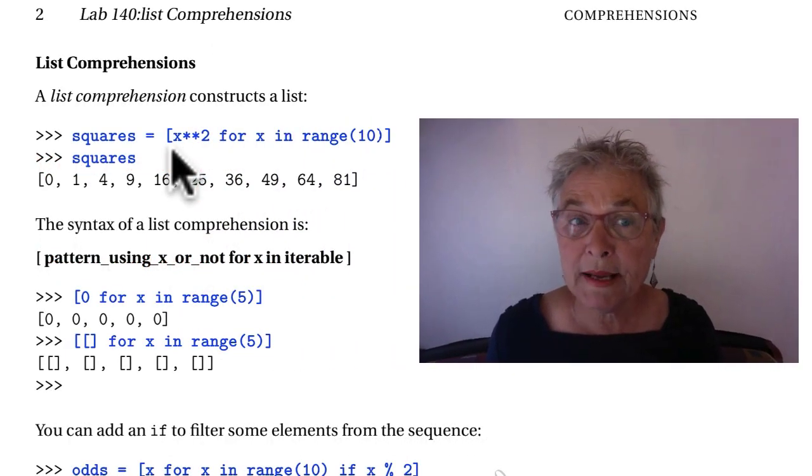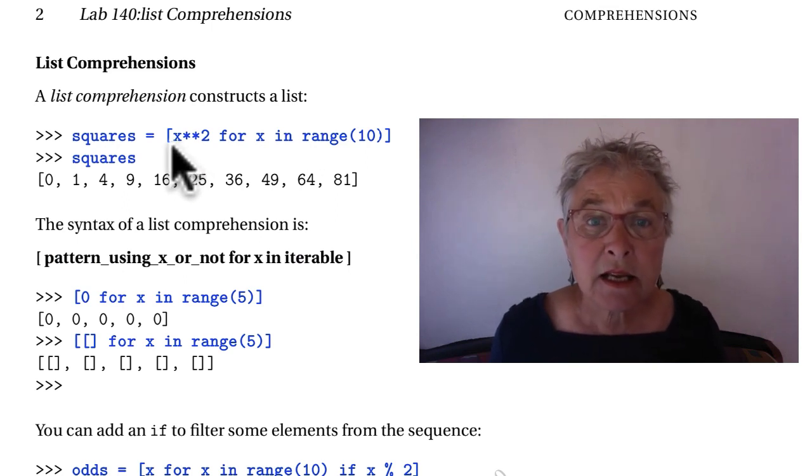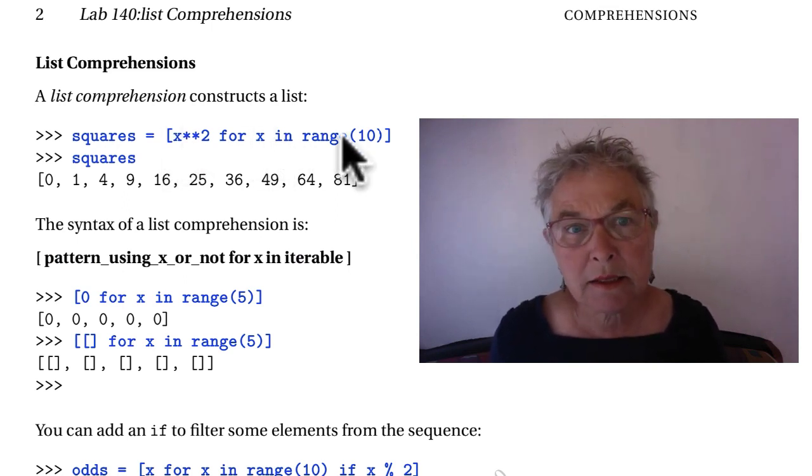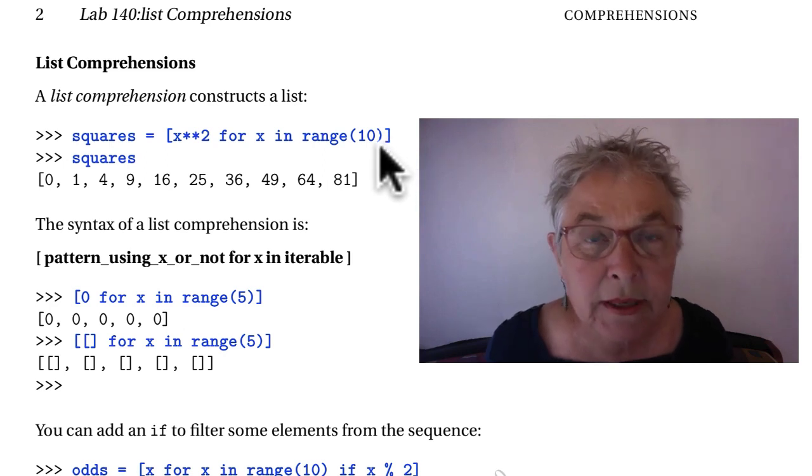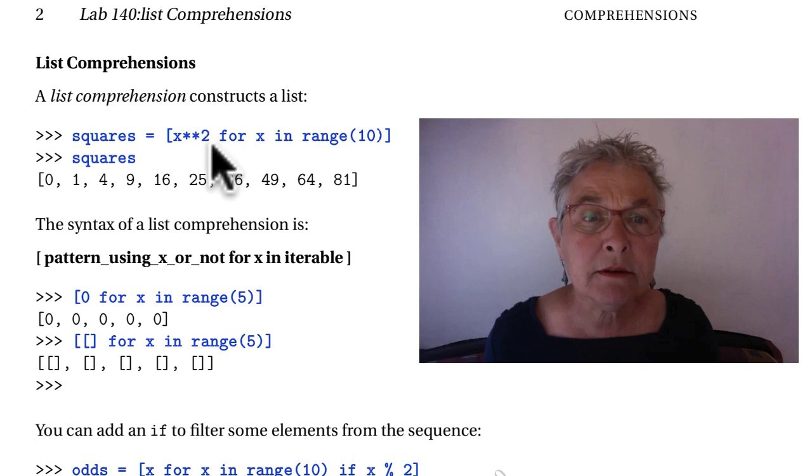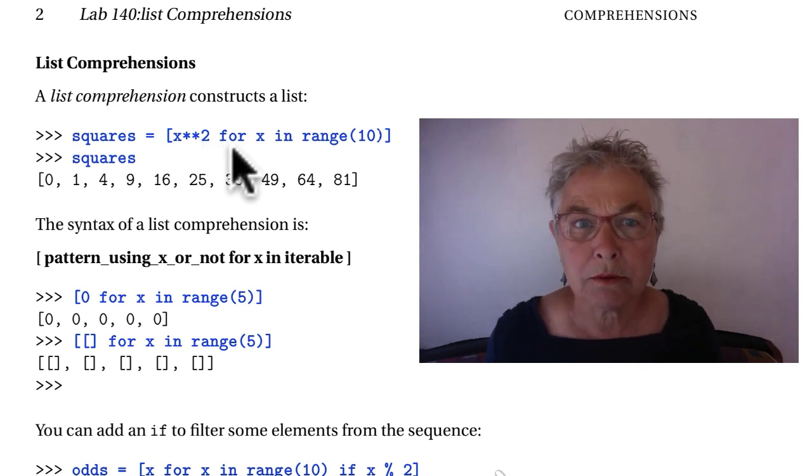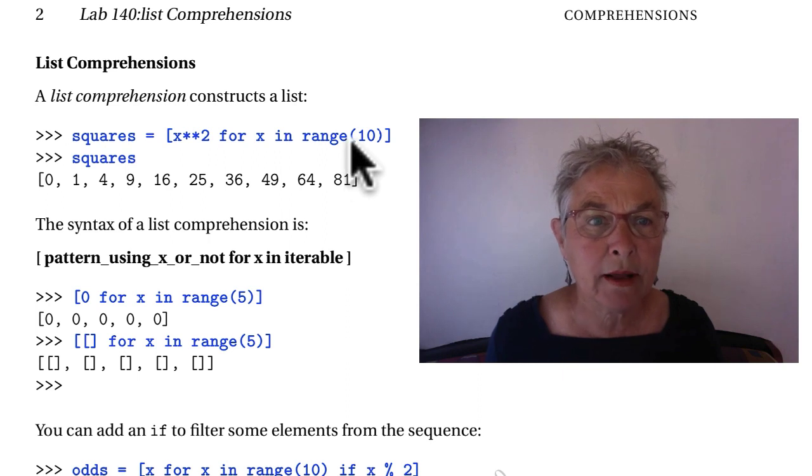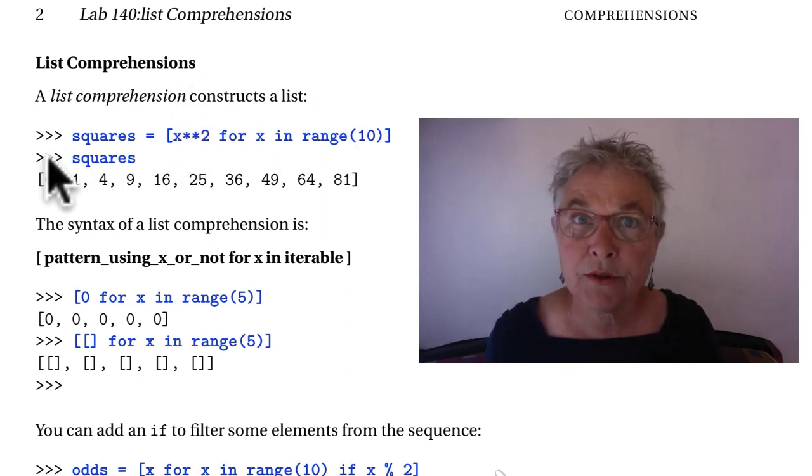Here we are making a list of squares. You see that the syntax is square brackets like a list but there are no comma separated elements in there. We have a pattern and a for loop. Each of the X's in that range will be squared and it'll become an element of the result.